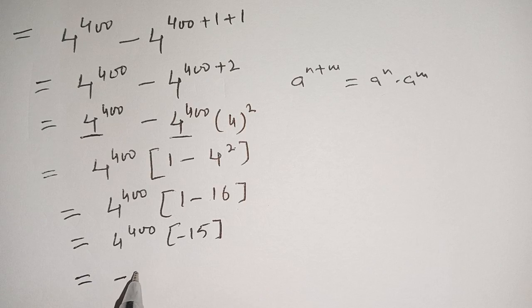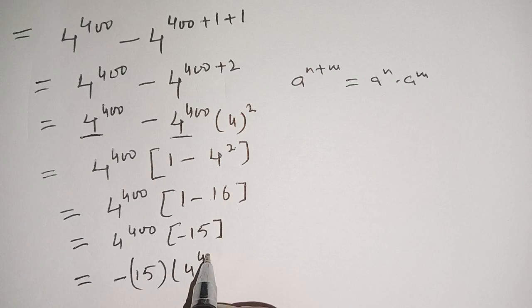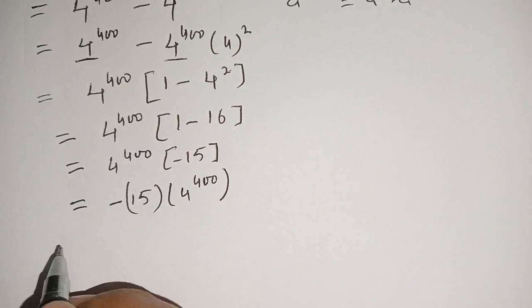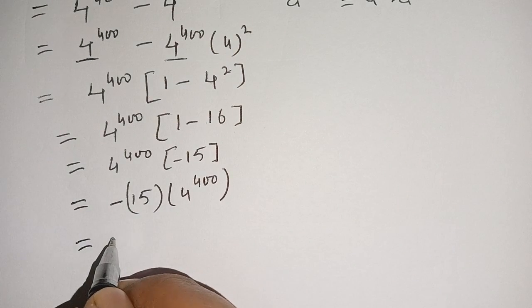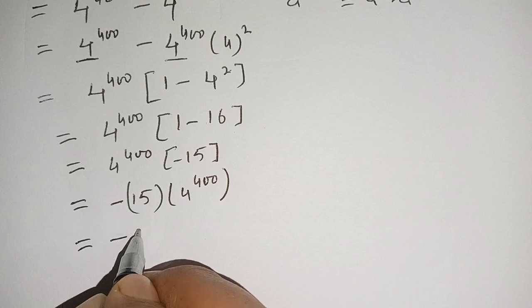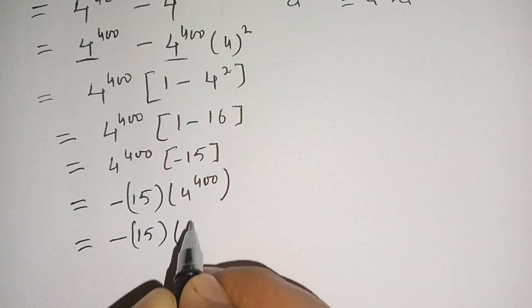It is equal to minus 15 times 4 power 400. In the next step we make it in a more simplest form. It becomes minus 15 and 4 can be written as 2 power 2.